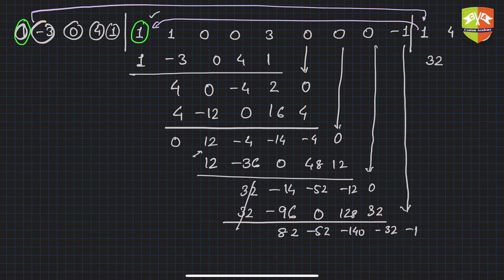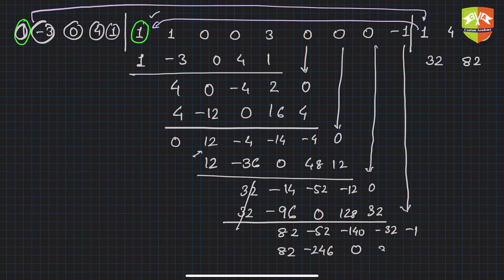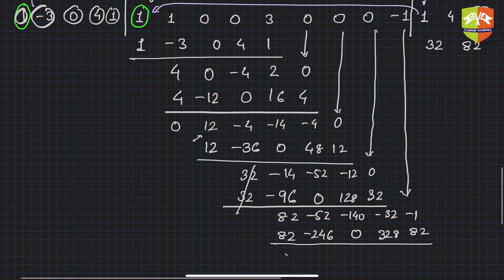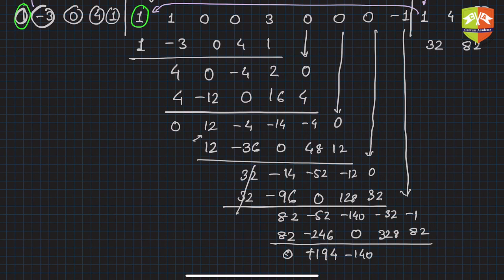The next quotient digit is 82. Multiply 82 by the divisor coefficients: 82, −246, 0, 328, 82. After subtracting, the remaining terms are: 194, −4, −360, −83. We can no longer divide, so these form the remainder.